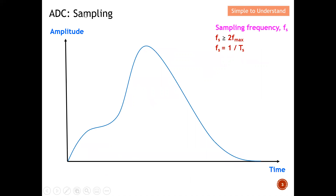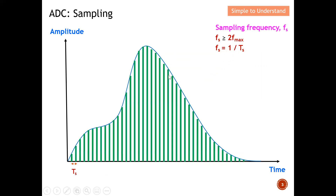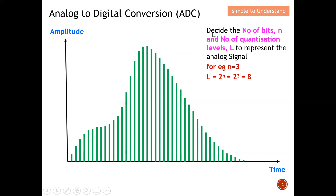The first step is sampling — how many samples will be taken from the analog signal. To prevent aliasing from happening, the sampling frequency must be at least two times fx (the signal frequency). Sampling at least at 2fx allows us to duplicate the original analog signal as closely as possible. After sampling, we need to decide the number of bits n and the number of quantization levels to represent the analog signal.